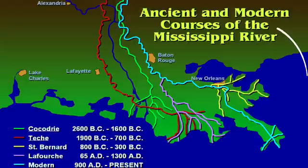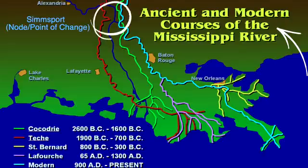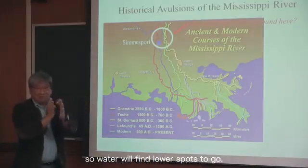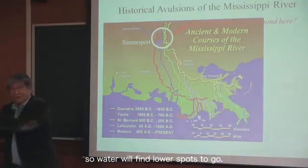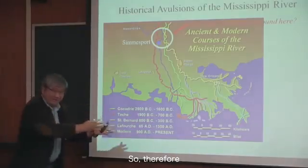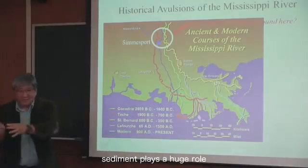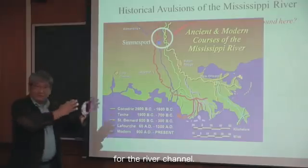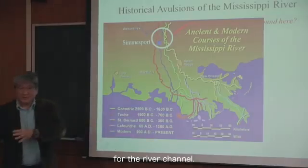When sediment is carried and piled — sediment deposits — the river bed rises up and basically the channel is clogged. So water will find a lower spot to go. Therefore, sediment plays a huge role for the river channel.